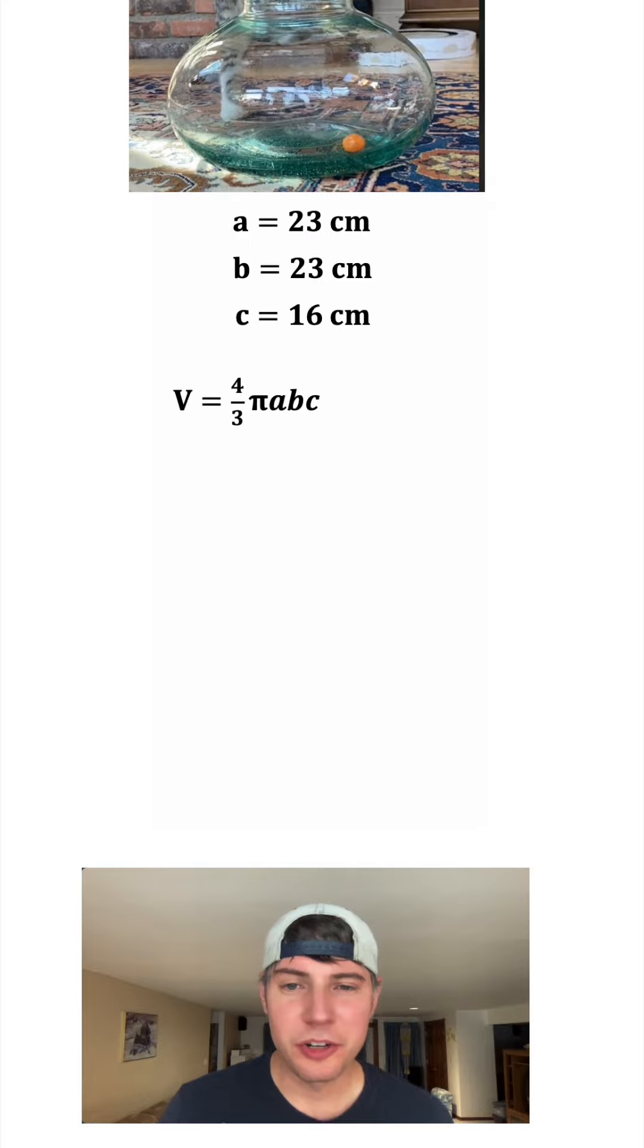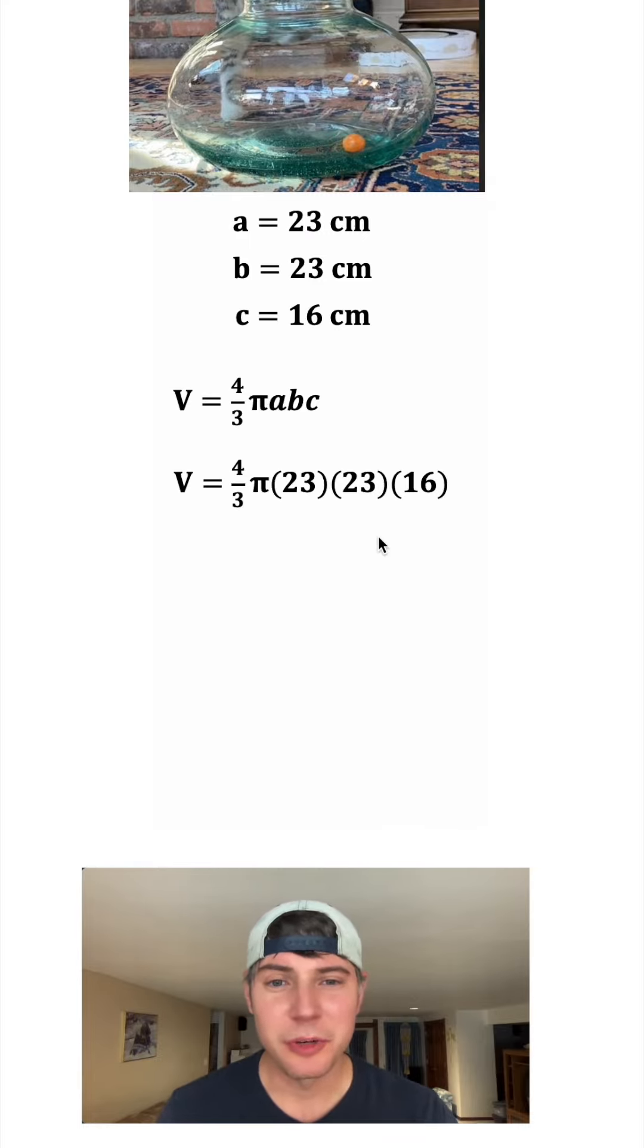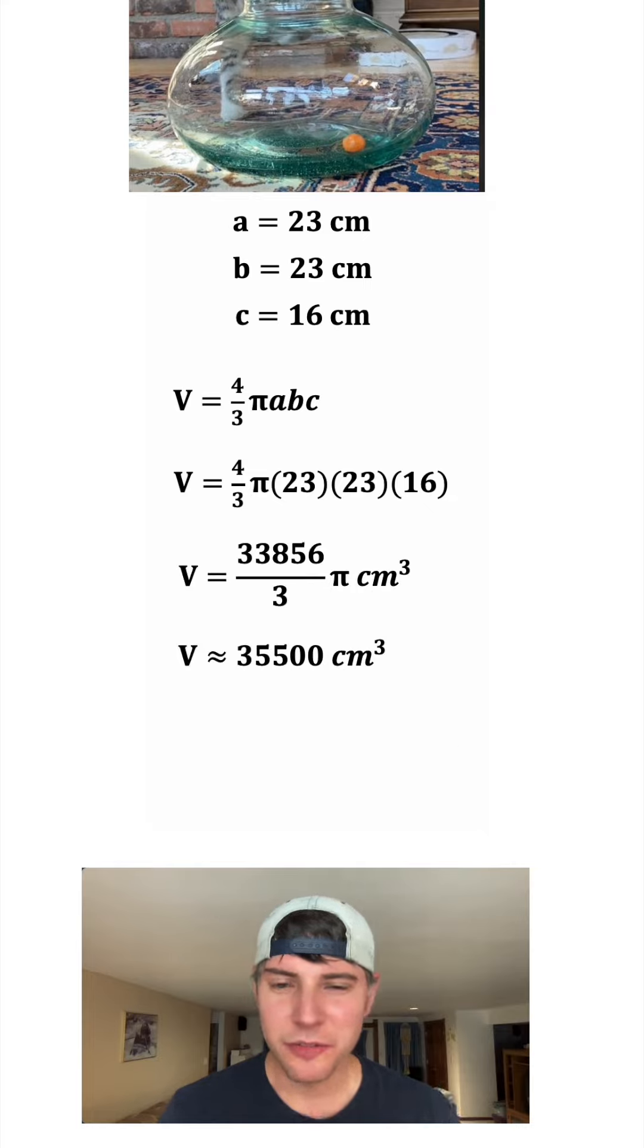And now we're ready to use our formula. The volume is 4 thirds pi A times B times C. So that's going to be 4 thirds pi times 23 times 23 times 16, which is approximately 35,500 centimeters cubed.